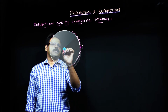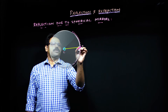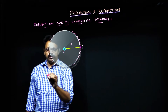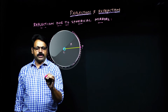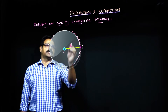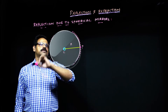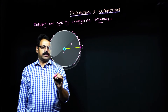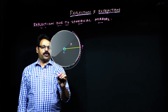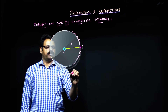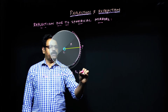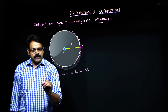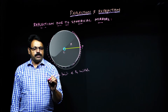The distance from the center of curvature to the pole is called the radius of curvature. The terms you need to remember before going into the analysis of spherical surfaces: what is pole? The center point of the mirror is going to be the pole, denoted by P.